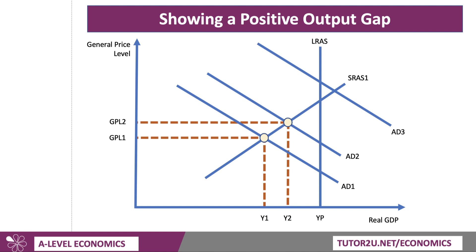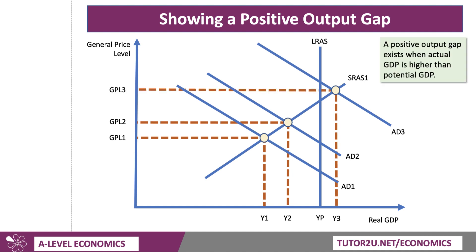Sometimes you can have very high levels of demand — with aggregate supply curves as they were, much higher demand at AD3, consistent, for example, with a boom in consumer spending or perhaps very high levels of government demand. At AD3, actual GDP is in balance with supply at output Y3, which lies to the right of potential output. Hence, there's a positive output gap when GDP is greater than potential GDP, and that's not necessarily sustainable. In that situation, the economy is running a little bit ahead of itself — output is above where you'd expect it to be in an economic cycle.